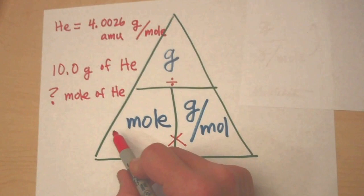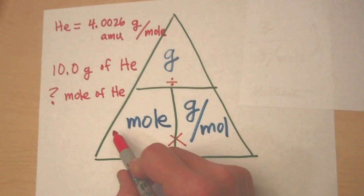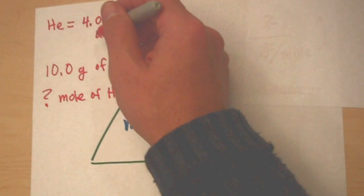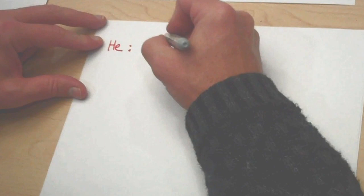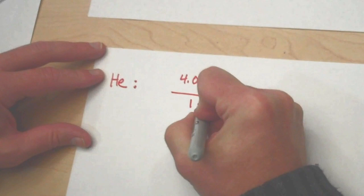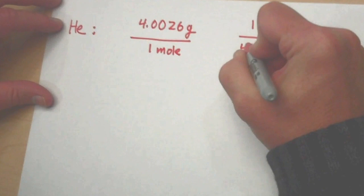Well, looking at our triangle, mole is a unit that we don't know. But we do know the grams is 10 grams. And we do know the atomic mass unit weight, grams per mole. So we can write this out then by saying that with helium, we have 4.0026 grams in one mole. Or we could also say that one mole of helium is equal to 4.0026 grams. Either way works.